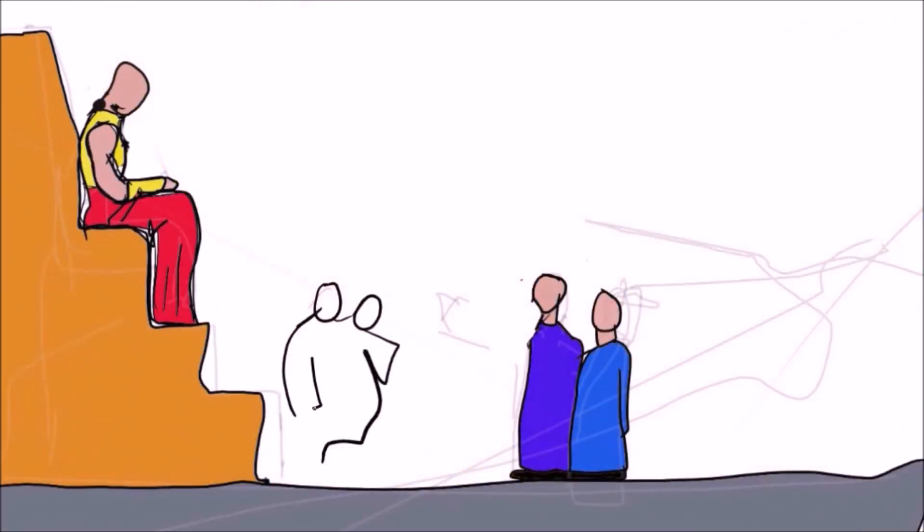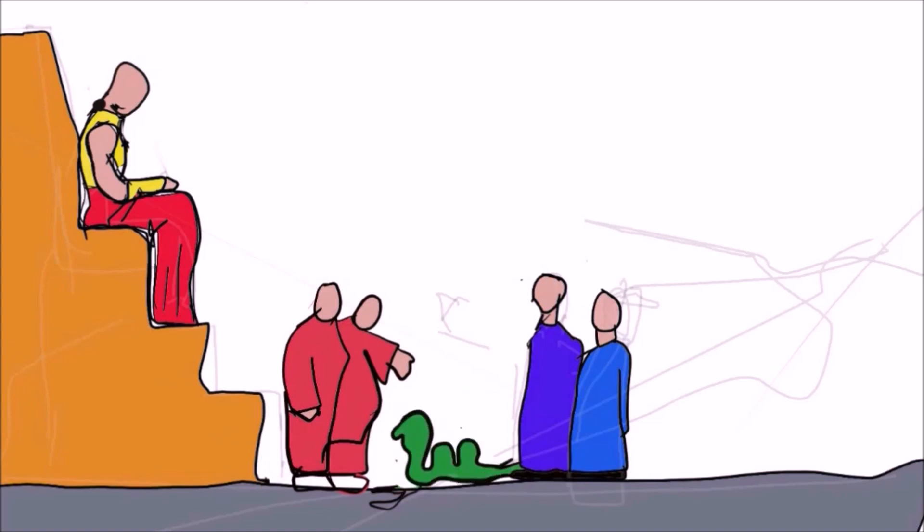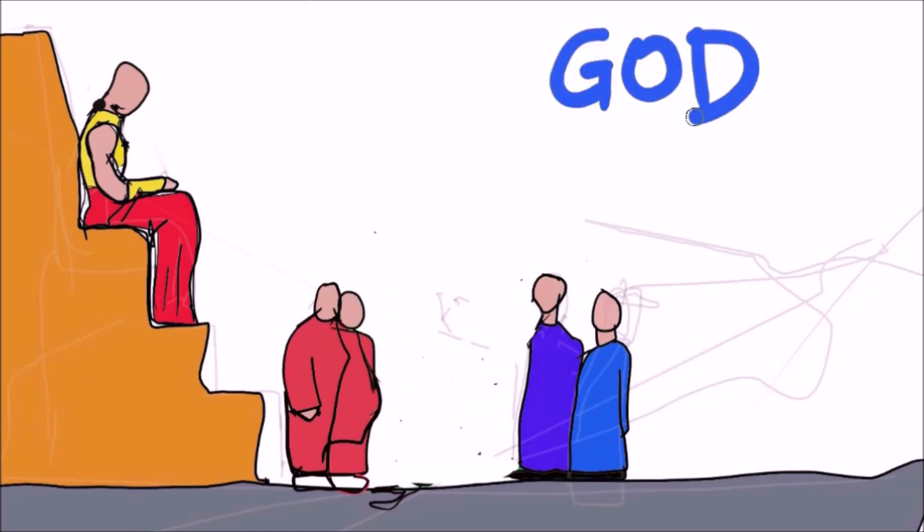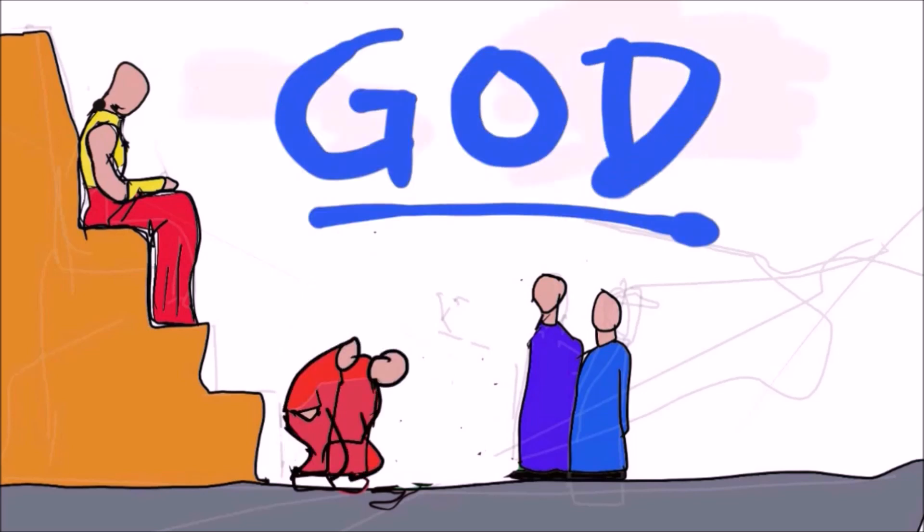God responded by revealing his sovereign plan. When Moses and Aaron approached the Pharaoh for a second time, the Pharaoh's magicians were able to duplicate one of God's miracles with their black hearts, which only increased the stubborn pride of Pharaoh. And what would follow would be the greatest battle between the power of God and the power of Satan. The greatest display of the supremacy of God over all other gods.